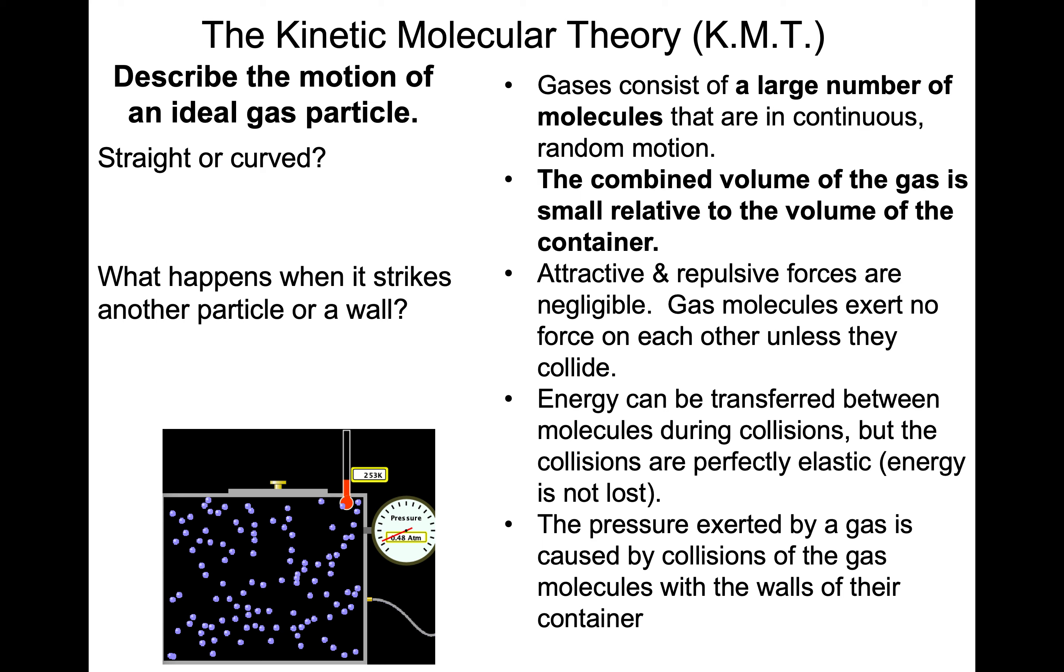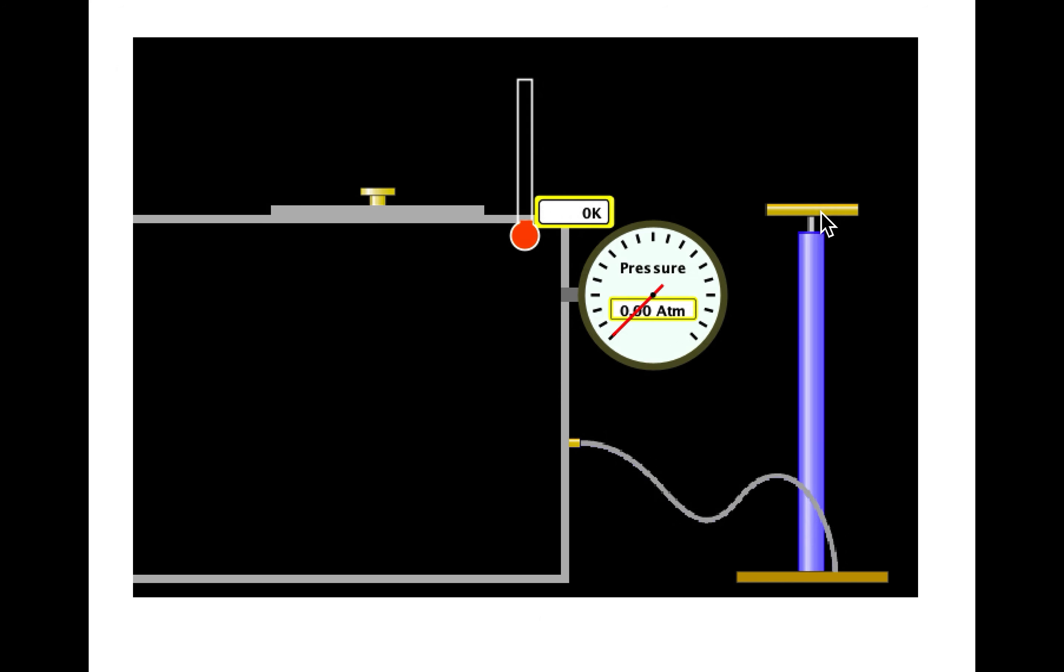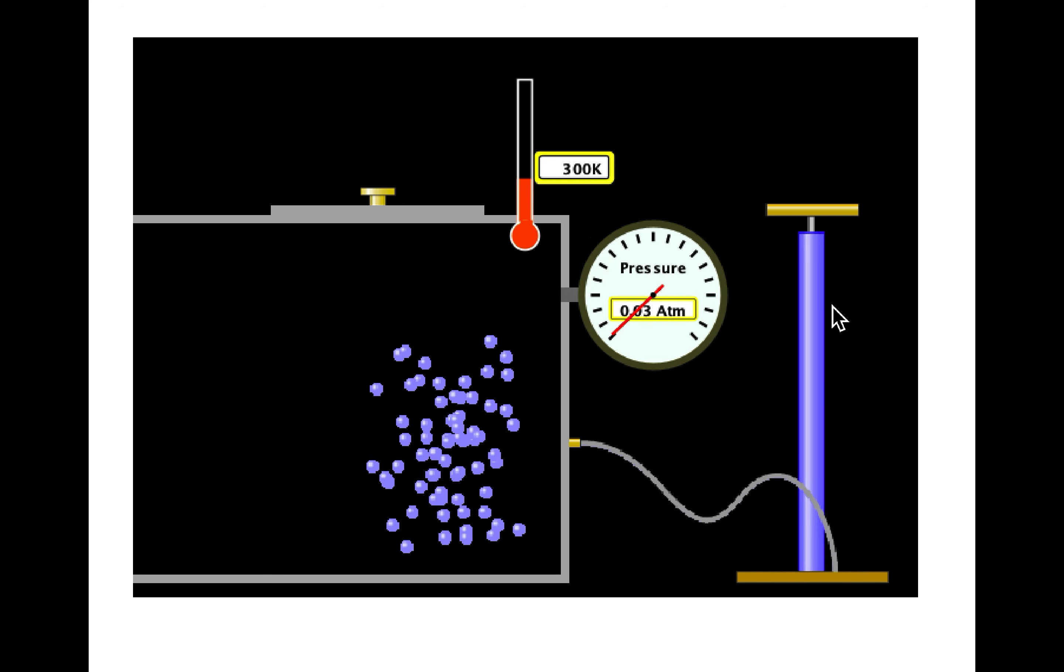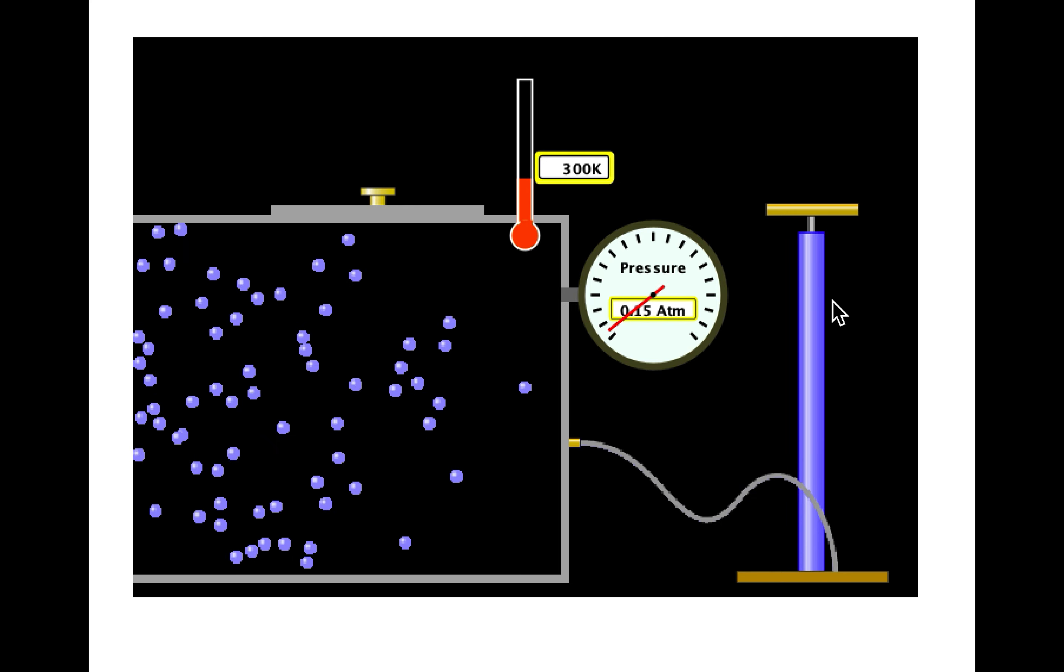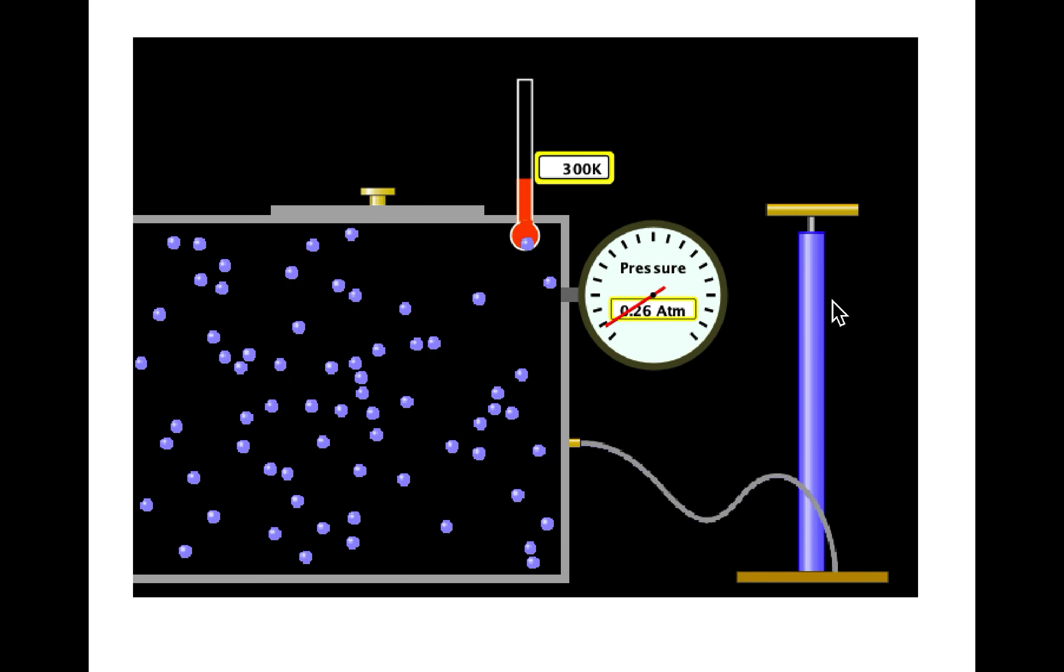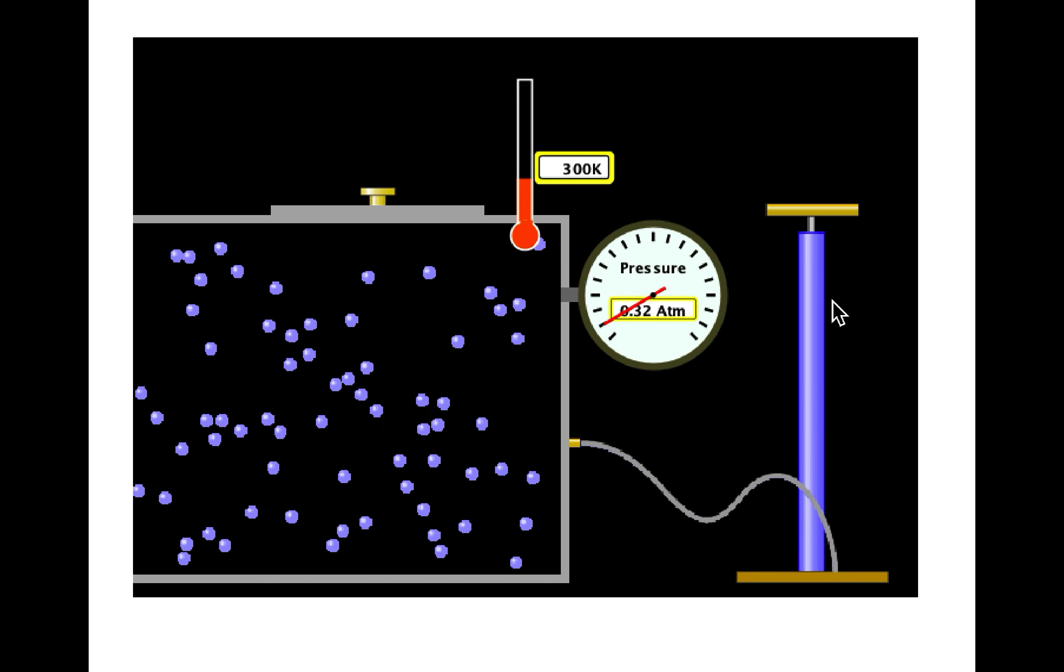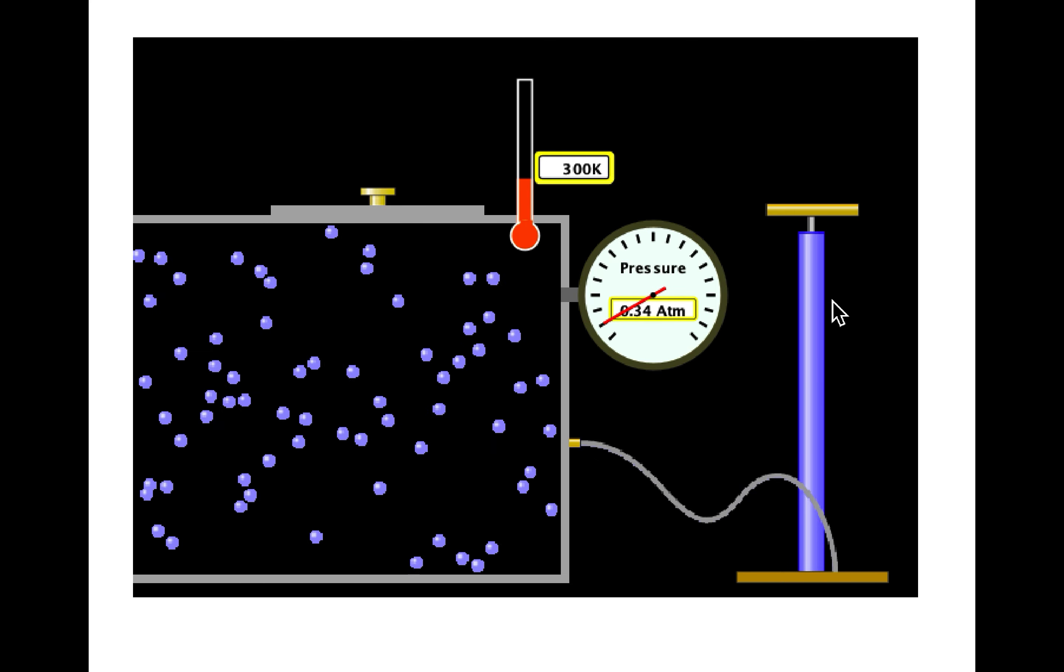So I'm going to explore that within this PhET simulation. Initial questions - let's begin to consider the motion of this ideal gas particle and analyze it. Is the motion straight or curved? And what happens when it strikes another particle or a wall? Attend to those two questions. And let's look at the model at the particle level. We'll add gas particles to our container. Observe their motion and observe what happens during the collisions.